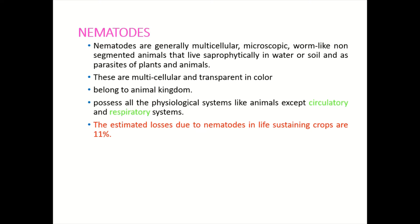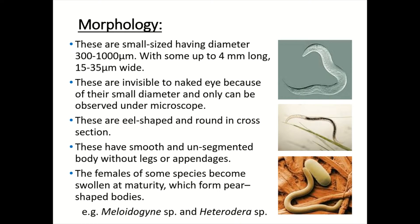The estimated losses due to nematodes in life-sustaining crops are 11%. Discussing the morphology of nematodes, these are small-sized organisms having a diameter of 300 to 1000 micrometres, with some up to 4 mm long and 15 to 35 micrometres wide. These are normally invisible to the naked eye because of their small diameter and can only be seen under the microscope, so they are microorganisms.